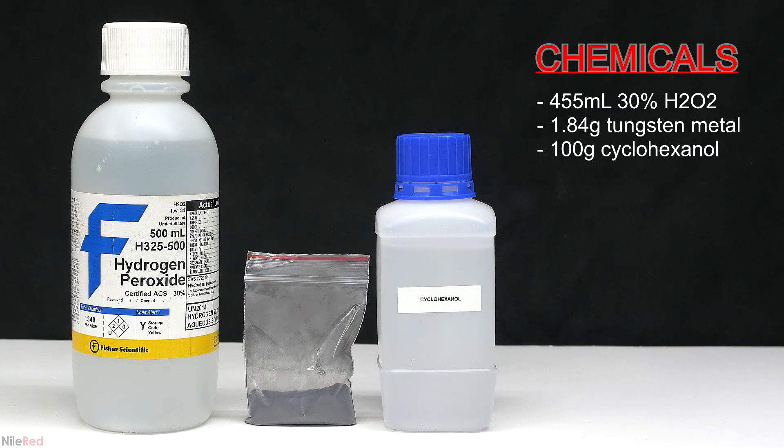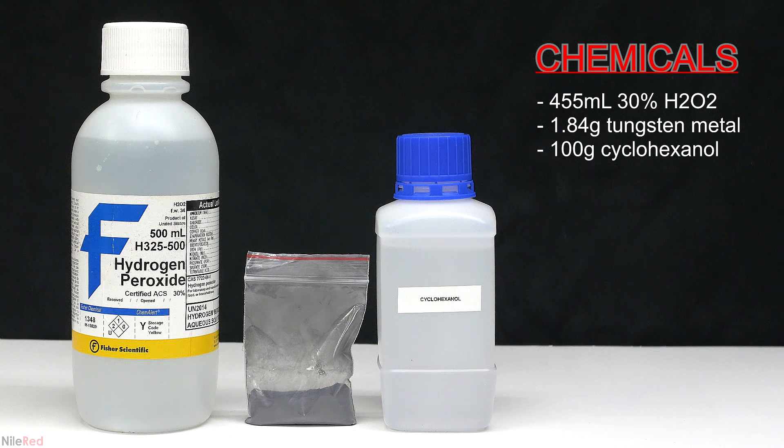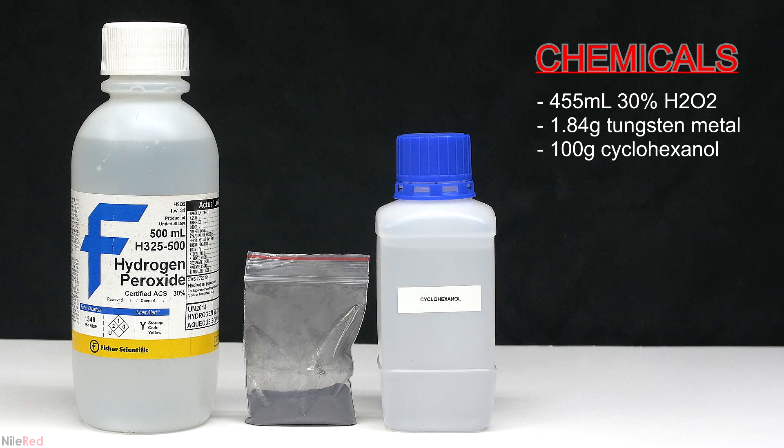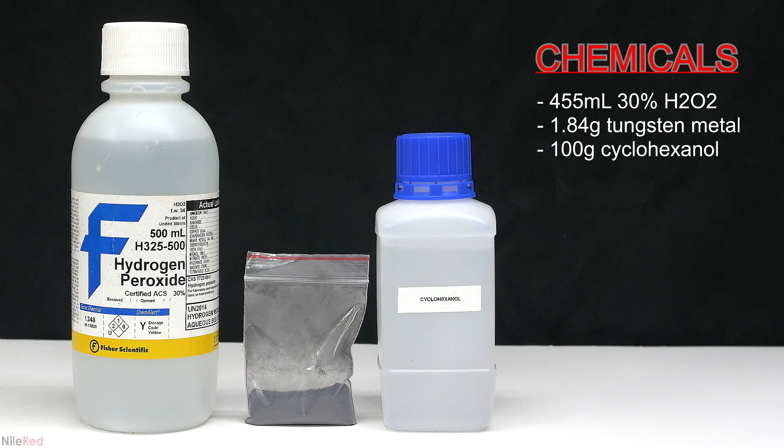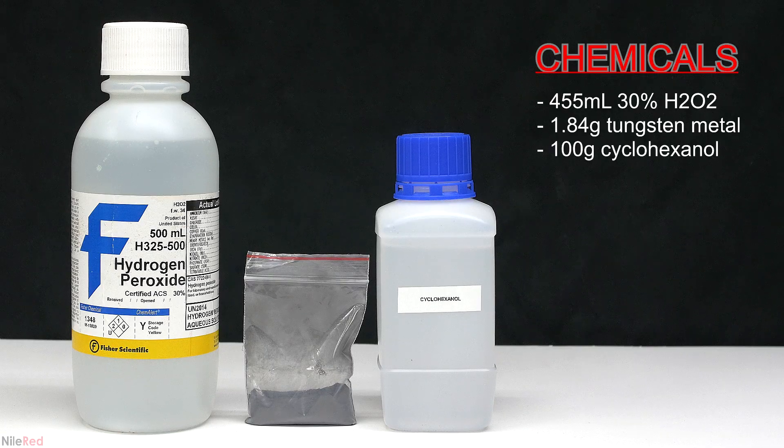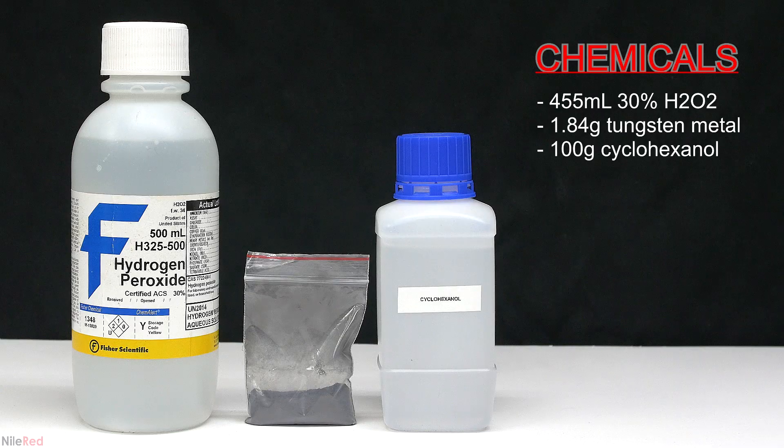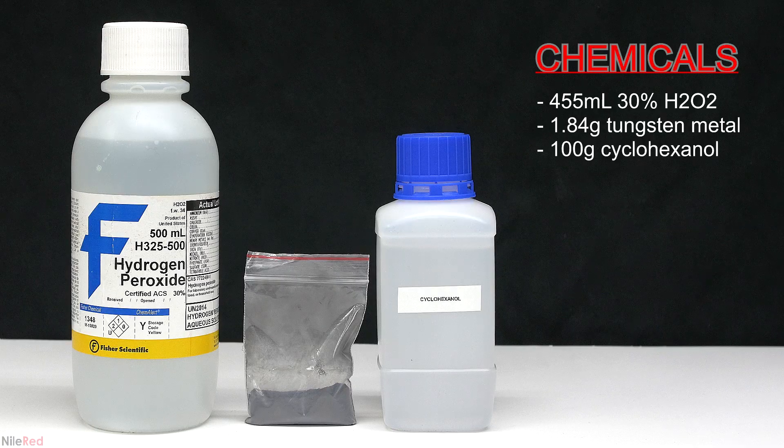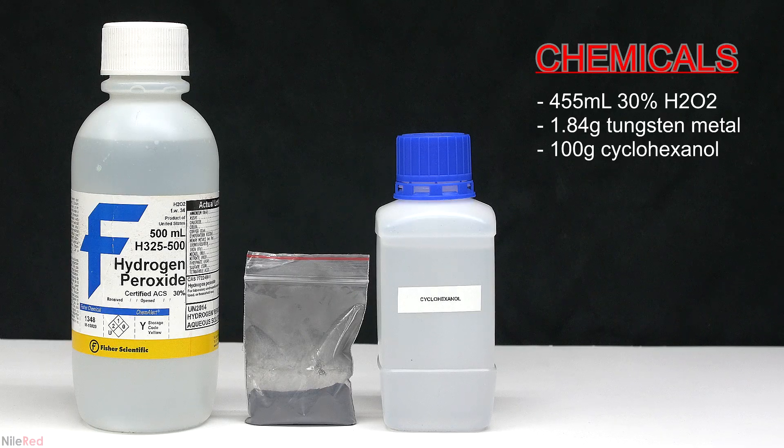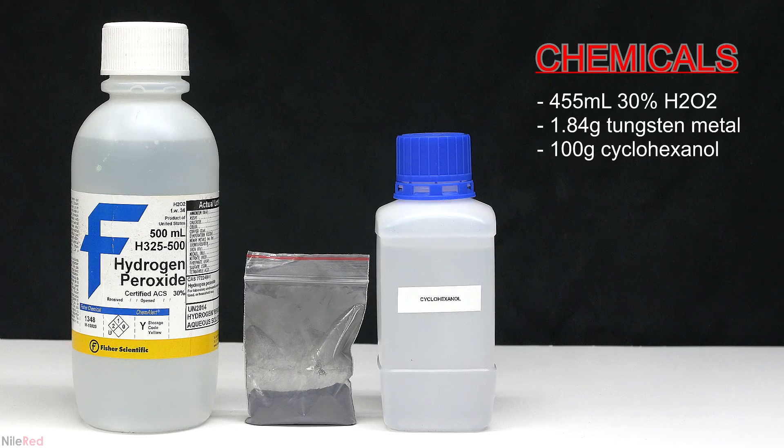Getting started with the reaction, everything I used is shown here. On the left, I have 30% hydrogen peroxide, in the middle, I have some powdered tungsten metal, and on the right is the cyclohexanol. The tungsten metal and the cyclohexanol were purchased from eBay, but I had to get the peroxide locally. The procedure that I'm following is from a paper that I found online, and I'll provide a link to it in the description.